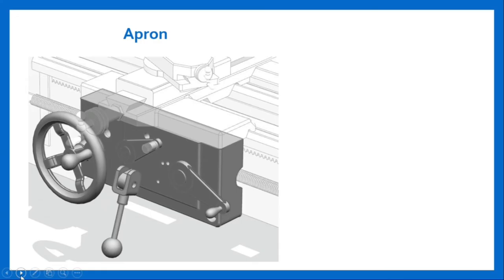The apron is the front portion of the carriage. Major parts of the carriage such as levers, gears, clutch, automatic feed, and plate nut are provided in the apron. It is useful in providing power and hand feed to both the carriage and cross slide. It is also used to provide power feed to the carriage during thread cutting through half nuts.